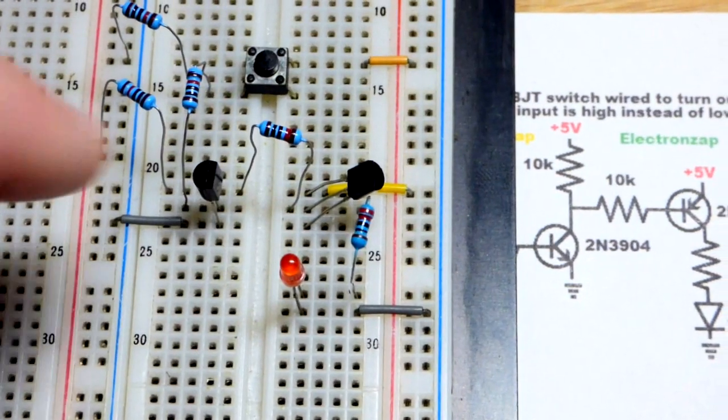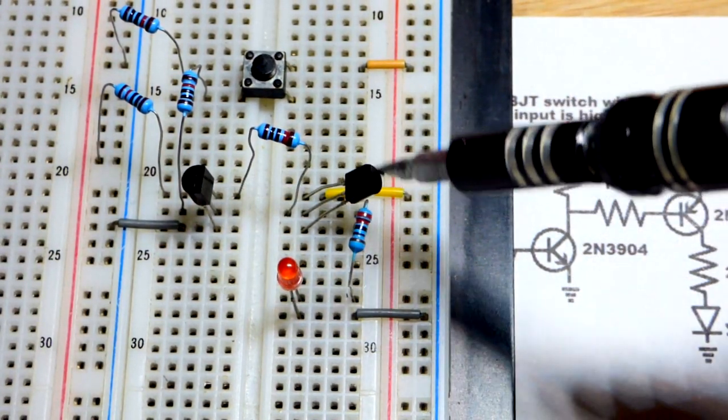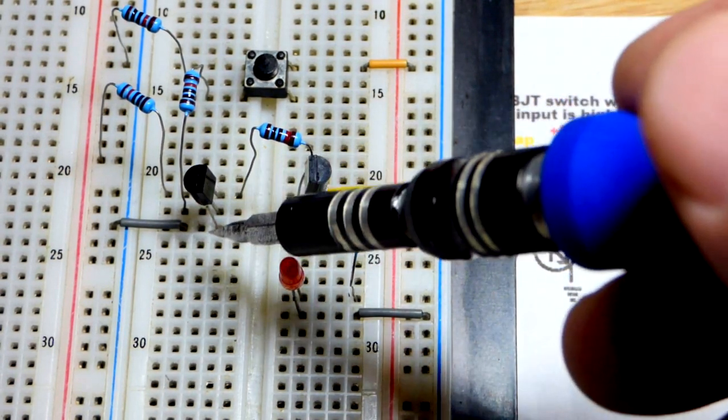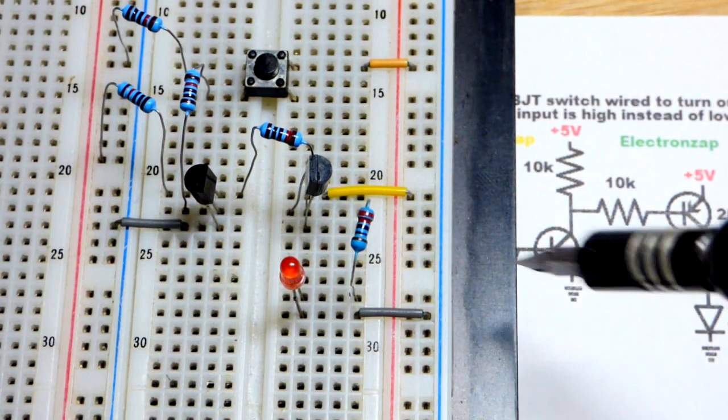So this is the NPN bipolar junction transistor, 2N3904. It's facing the other way but has the same pin layout as the 2N3906. So since it's facing the other way, emitter is to the bottom. That's connected directly to ground, as you can see there.